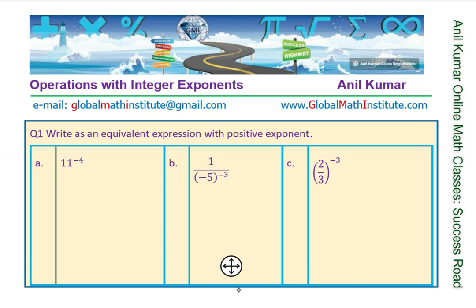Let's begin with the first question: write as an equivalent expression with positive exponents. It really means that if it is 11 to the power of minus 4, I will simply write this as 1 over 11 to the power of 4. The negative here makes it a reciprocal. The next one is 1 over minus 5 to the power of minus 3. The minus makes it reciprocal, so we get minus 5 to the power of 3.